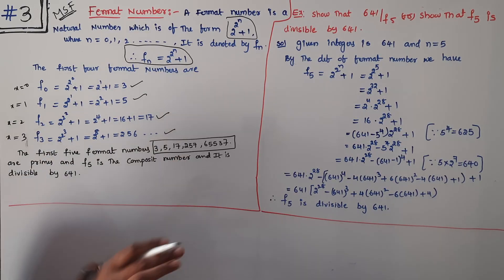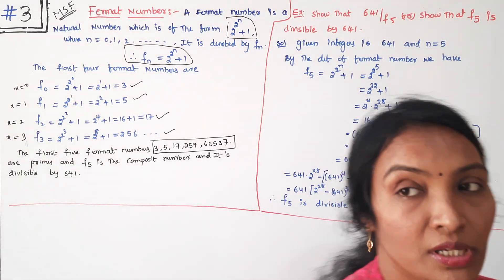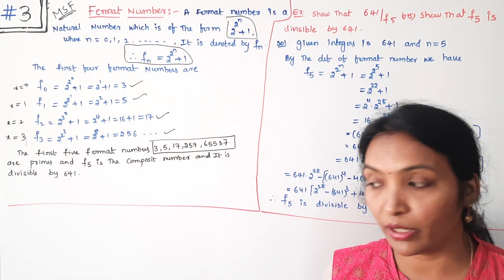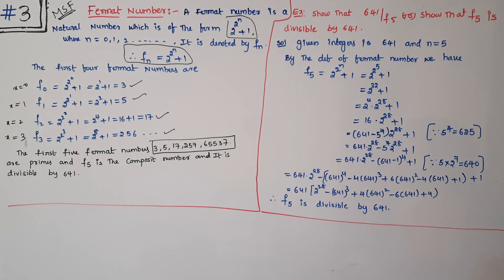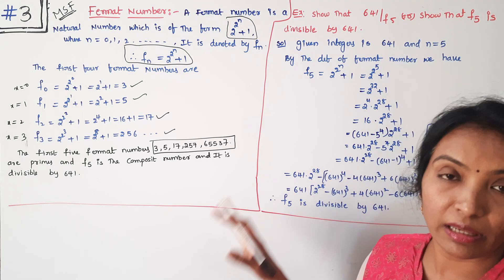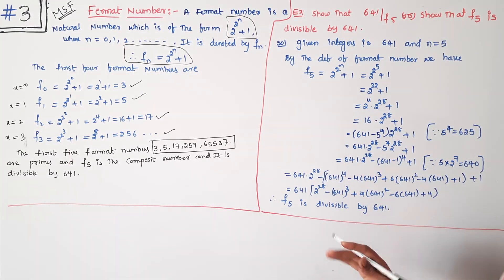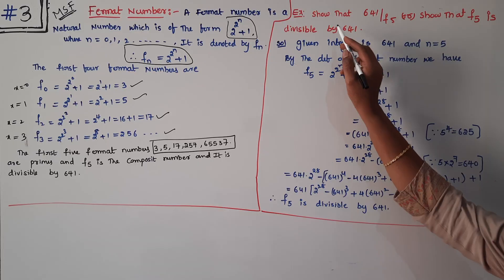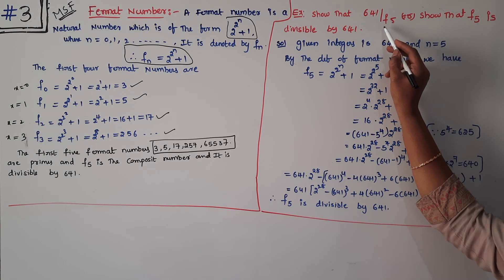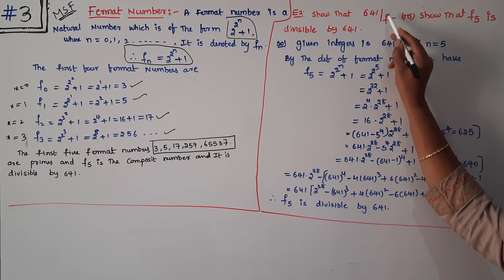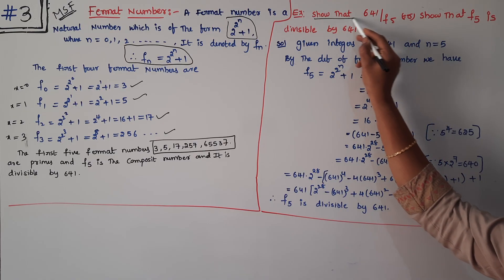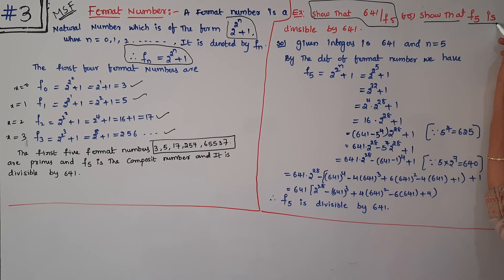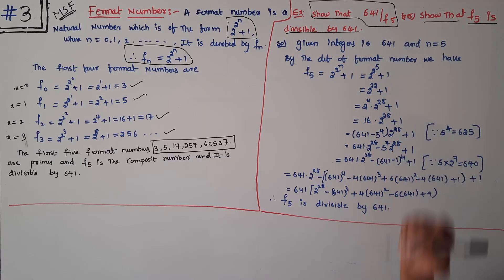General form Fermat Number. I will show you some important method, important problem in the next class, but let me tell you what is Fermat number. This is also a repeated problem: show that 641 divides F_5, show that F_5 is divisible by 641.